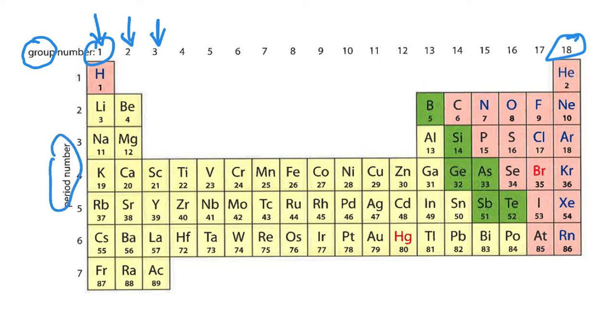Periods are going across rows, so we have seven periods here in our periodic table.